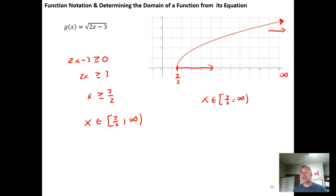The key here is that we want the stuff under the radical to be non-negative—it has to be greater than or equal to zero.